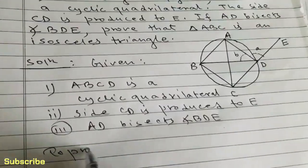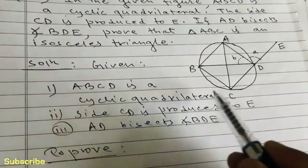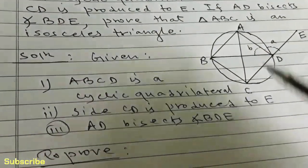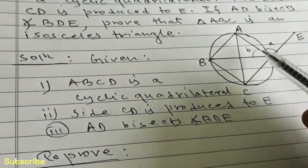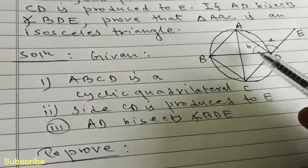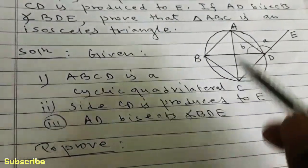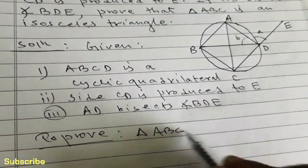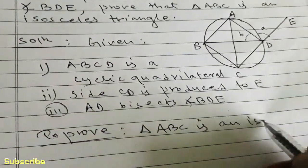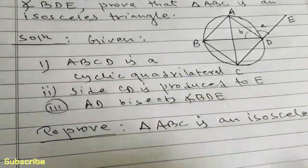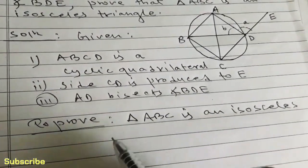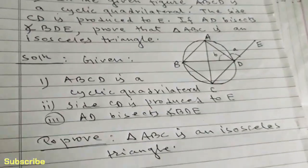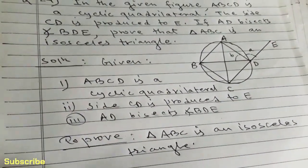To prove: triangle ABC is an isosceles triangle. Dear students, AD bisects angle BDE means it divides the angle BDE into two equal parts, which we have supposed as angles A and B in the figure. Now let's write down the proof.